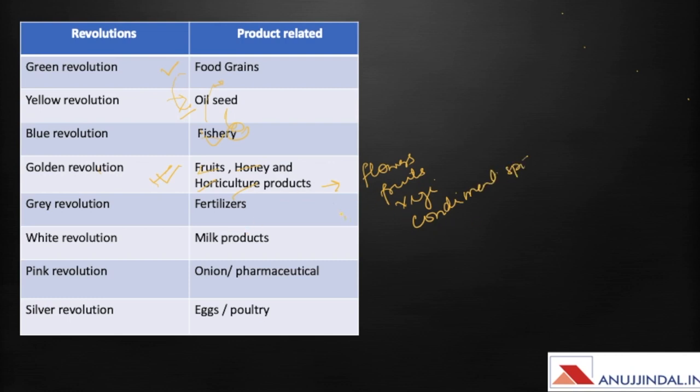Grey revolution was related to fertilizers, white revolution to milk and dairy products, pink revolution to onion and pharmaceuticals, and silver revolution to eggs and poultry.